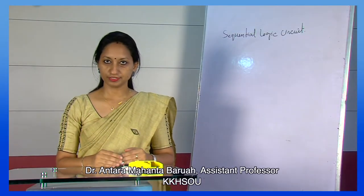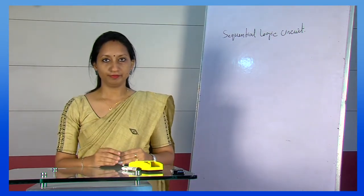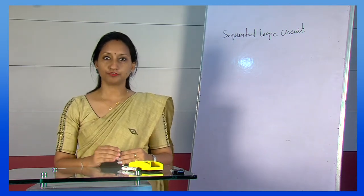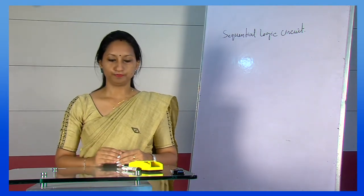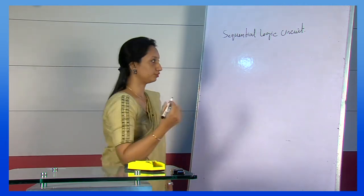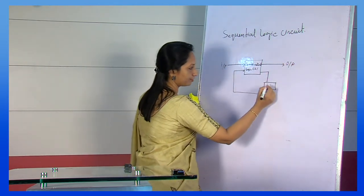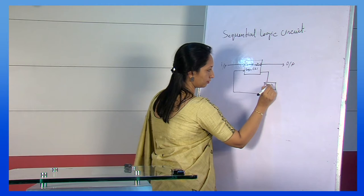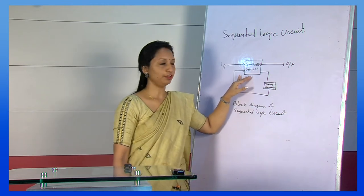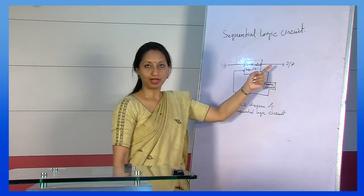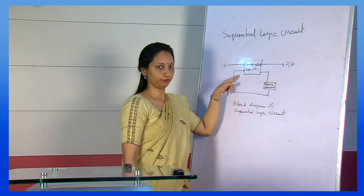Now, we shall discuss about sequential logic circuits. In a sequential logic circuit, there is a memory element. The output of a sequential logic circuit depends on the present input as well as the past output. Let us see the block diagram: there is a combinational logic circuit with input and output, and a memory element connected to it forming a feedback path.